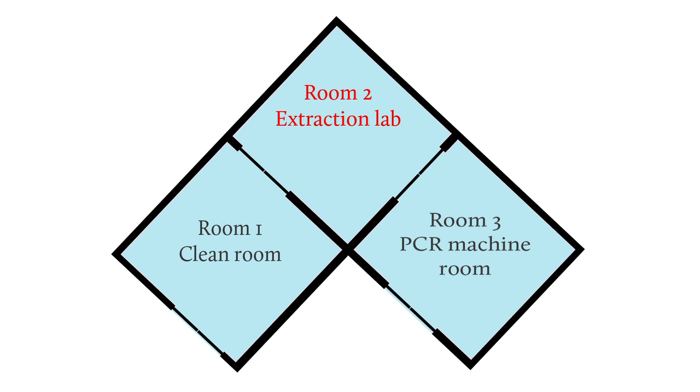The second room in your system would be the extraction lab where you've prepared your DNA template ready to put into the PCR. Once you've set up your reaction in your clean room, you would take the reaction tubes or plates to the extraction lab and add your DNA template. From there you can go on to the third room, the PCR machine room.